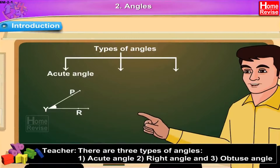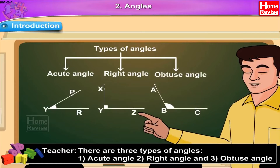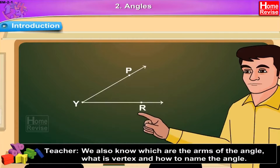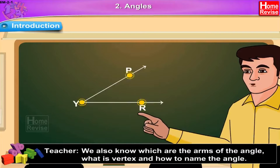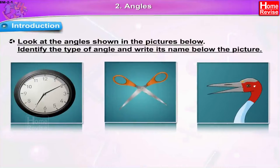1. Acute angle, 2. Right angle, and 3. Obtuse angle. We also know which are the arms of the angle, what is the vertex, and how to name the angle. Look at the angles shown in the pictures below. Identify the type of angle and write its name below the picture.